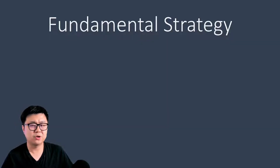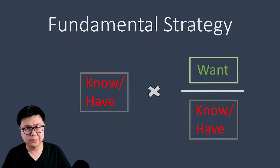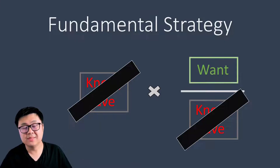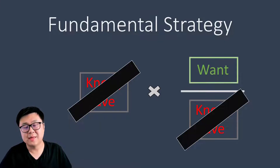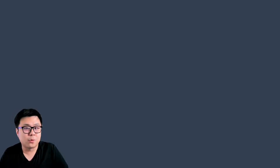Our approach will always be to start with what the question gives us — something we know — and then multiply it by a ratio. That ratio will have what we want on the top and what we know on the bottom. This way we can cross out the units of whatever we have so that the end unit will be whatever the question is asking for. In the beginning of this chapter the questions will be this simple, but later on there may just be more steps in between.